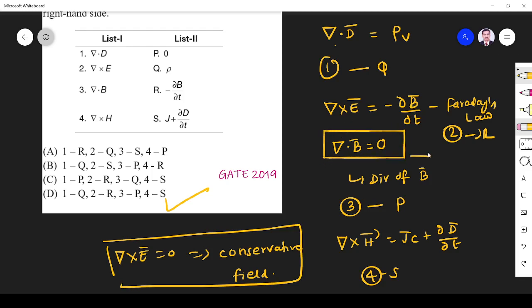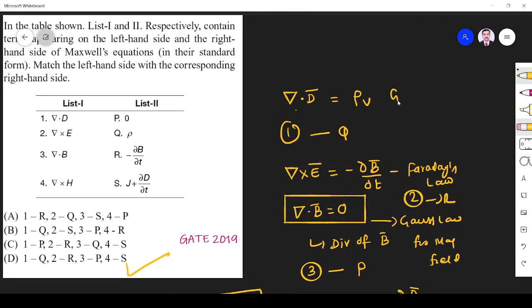This is Gauss law for magnetic field. This one is Ampere-Maxwell law. The first one is Gauss law for electric field. So option D is the right answer. Thank you.